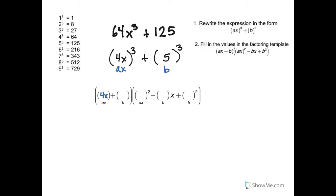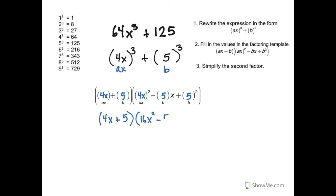So ax is 4x, and I fill that in. And b is 5, and I fill that in in all the places for b. The template gives us the factoring. All that's left is to simplify the quadratic: 4x squared is 16x squared, minus 5x, plus 5 squared is 25. So 64x cubed plus 125 equals 4x plus 5 times 16x squared minus 5x plus 25.